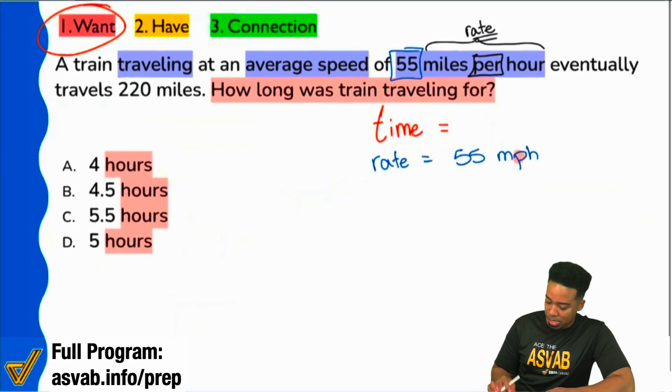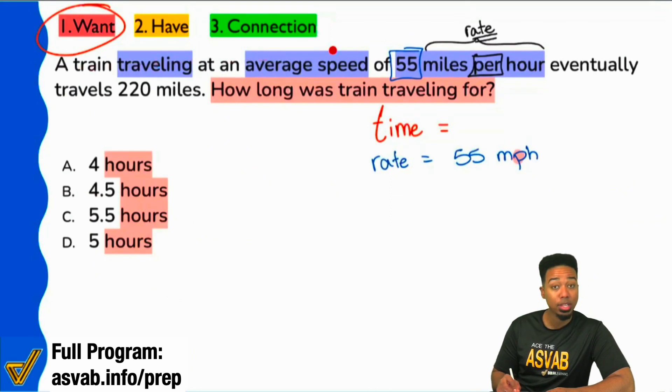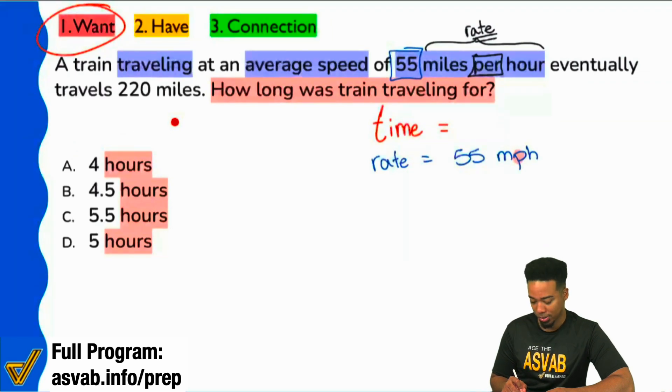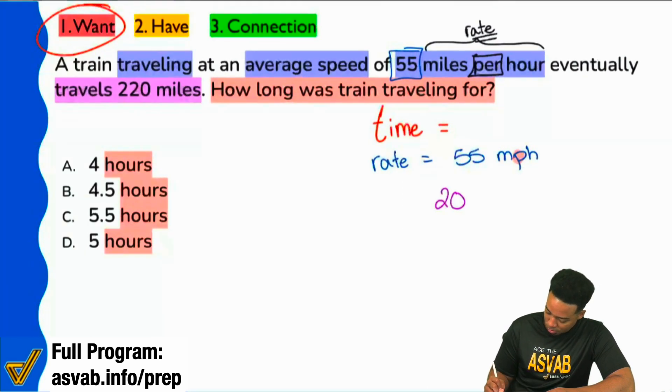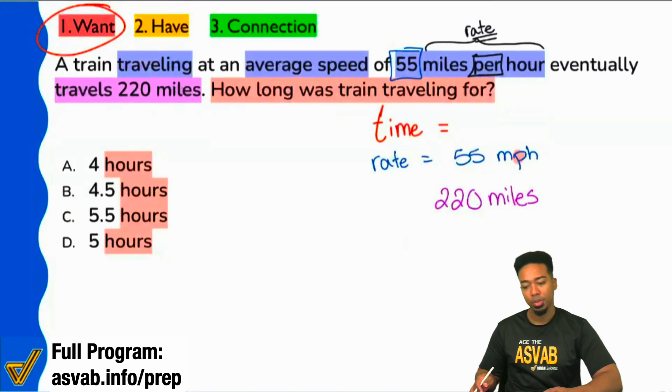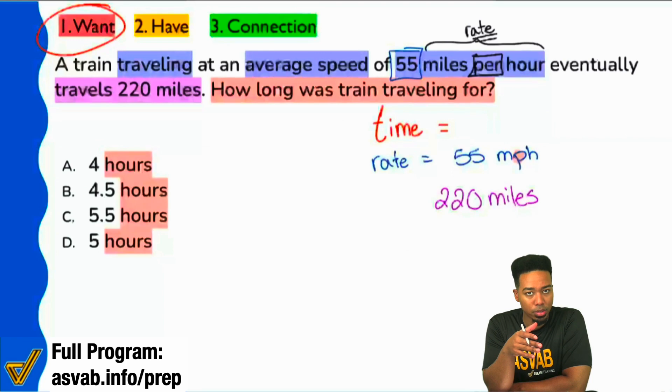When we see here, it says this train that's traveling at this rate, it'll eventually travel 220 miles. We can write that out. Travels 220 miles. At this point, given what we're trying to find, given the information we have, what topic are we dealing with?